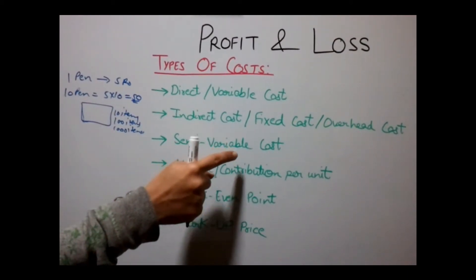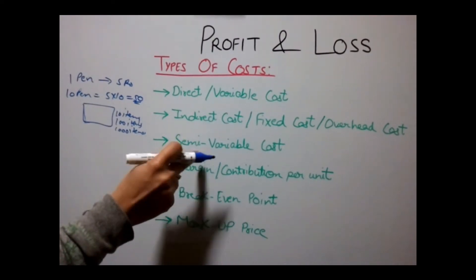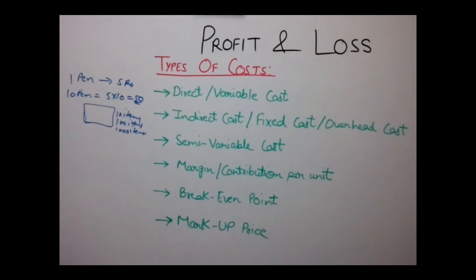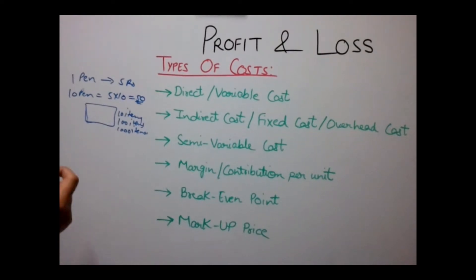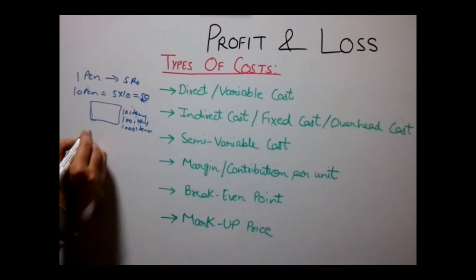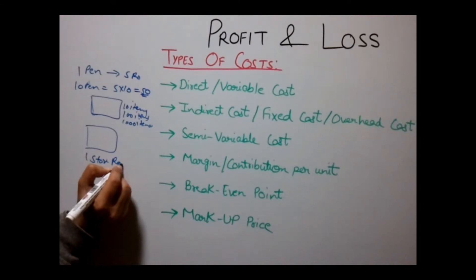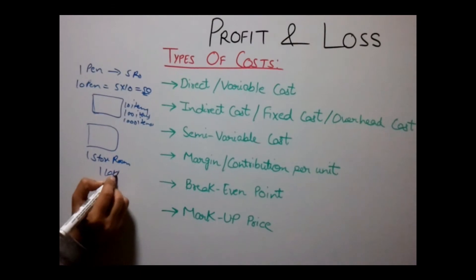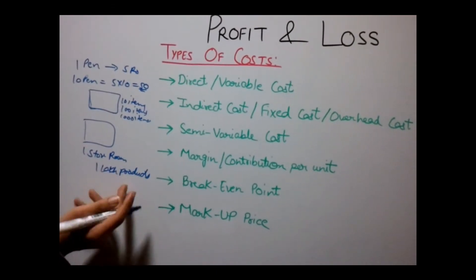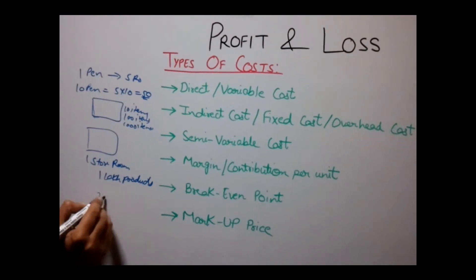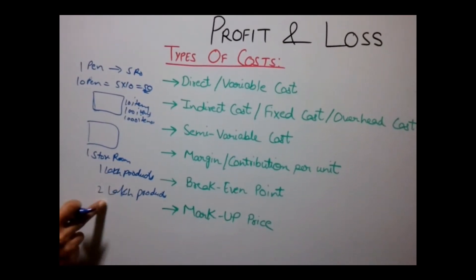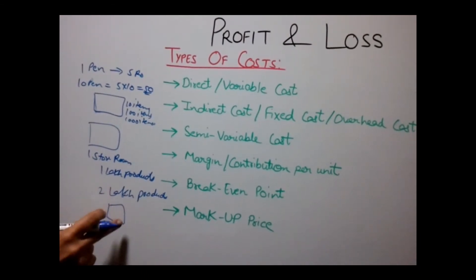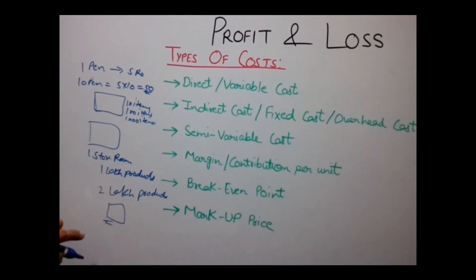Another type of cost is Semi-Variable Cost. This type of cost acts as a Fixed Cost under normal conditions, but when sales increase or decrease at an unconditional rate — that is, in rare circumstances — it becomes a Semi-Variable Cost. For example, if a company currently needs one storeroom to store 1 lakh products and suddenly demand increases requiring 2 lakh products, the company has to rent one more storeroom. This additional cost is called Semi-Variable Cost, as it applies for a short period of time.